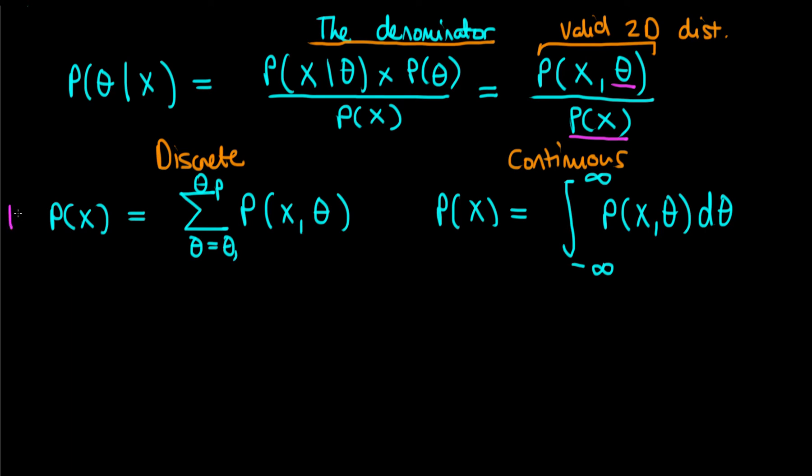It's important to note that in both cases the parameter is one-dimensional. In other words there's just one parameter. That means in practice both of these calculations can actually be undertaken. The sum is fairly simple to do so long as there aren't too many values of theta, and the continuous one-dimensional integral can generally be done either approximately or analytically.